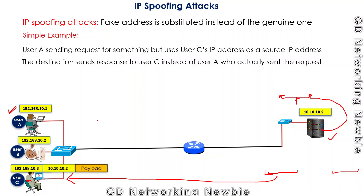The sender has spoofed the IP address, and the purpose can be anything. For example, the user may want to keep a server busy by using different source IP addresses — sometimes using another machine's IP, sometimes using an IP address that doesn't even correspond to any node on the network. This bad actor can use spoofing for various malicious purposes.